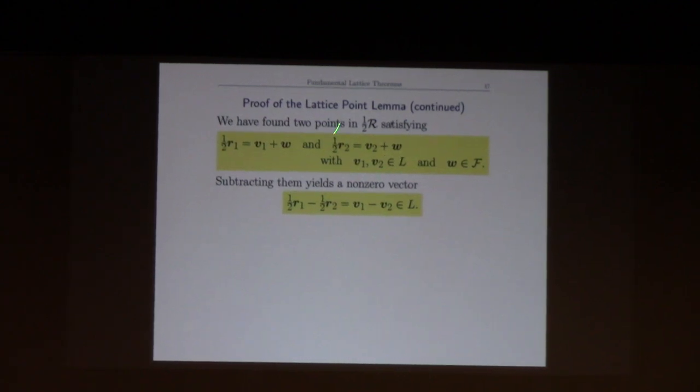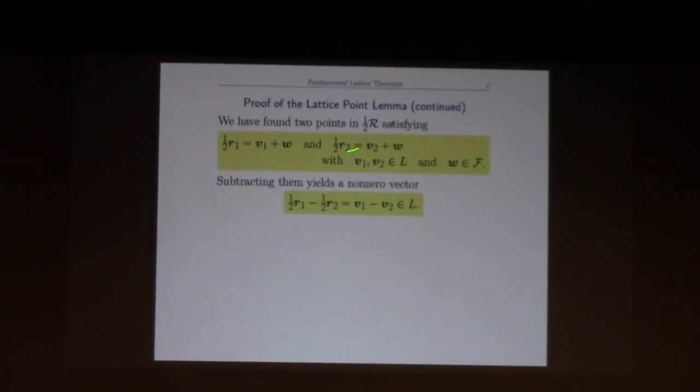That was all our work - when I say found two points, we found two distinct points. r1 and r2 are different, so that's not zero.